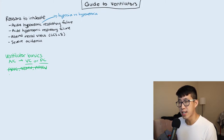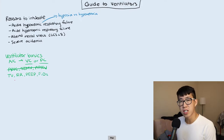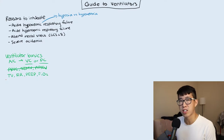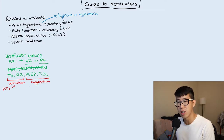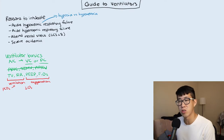The four variables you can set are tidal volume, respiratory rate, PEEP, and FiO2. A very important question you'll get asked is: which variables affect ventilation (CO2 levels) and which affect oxygenation? Tidal volume and respiratory rate affect ventilation, while PEEP and FiO2 affect oxygenation. So if your patient's PCO2 is rising to 70, 80, or 90, adjust tidal volume or respiratory rate. If their oxygen saturation is in the 70s or 80s, you need to modify PEEP and FiO2.